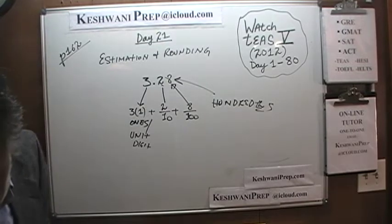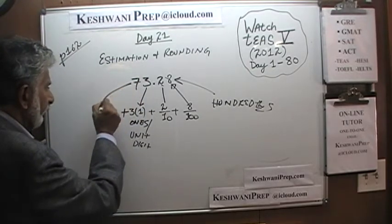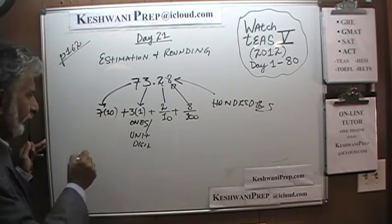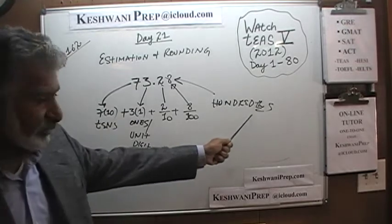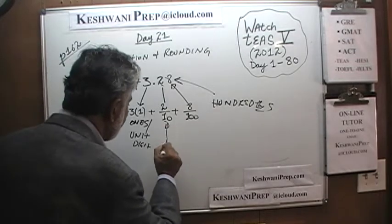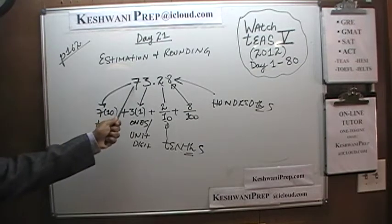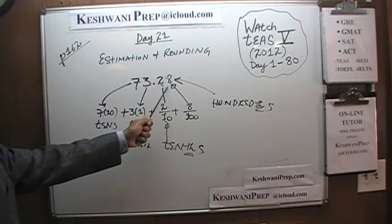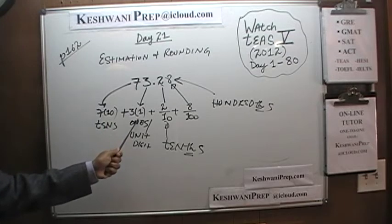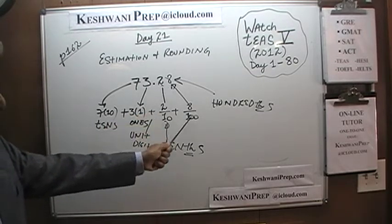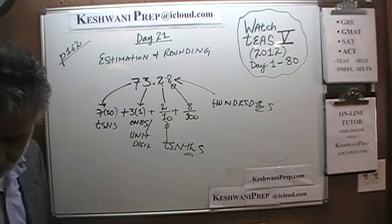Going in the other direction, consider the quantity 73.28. This quantity is made up of 7 tens, 3 ones, 2 tenths, and 8 one-hundredths. The tens digit tells us how many tens we have, the ones digit tells us how many ones, the tenths digit tells us how many tenths, and the hundredths digit tells us how many hundredths.